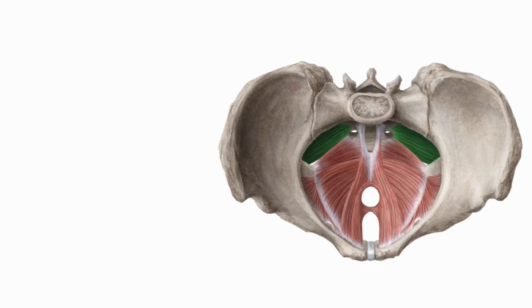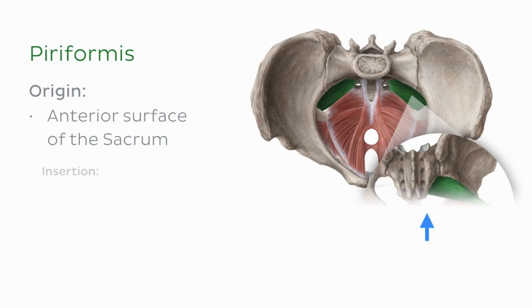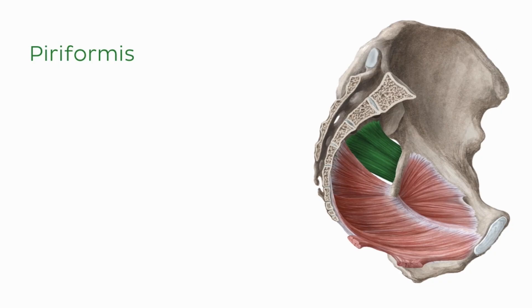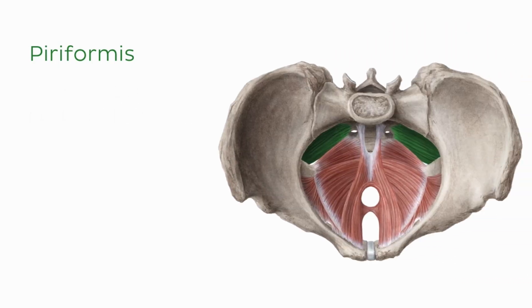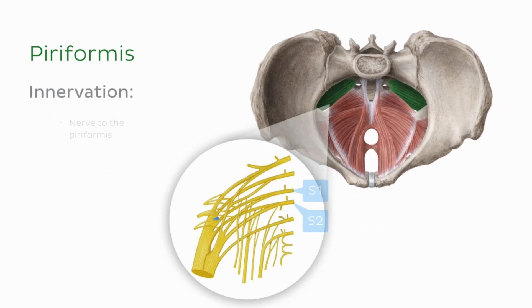First up, we'll look at the muscle highlighted now, which is the piriformis. Superior and posterior to the coccygeus, this muscle originates medially from the anterior surface of the sacrum and travels out of the pelvis laterally to the greater trochanter of the femur. You can see in this image how the piriformis makes up the posterolateral wall of the pelvic cavity. This muscle is a lateral rotator and abductor of the thigh and is innervated by the nerve to the piriformis.